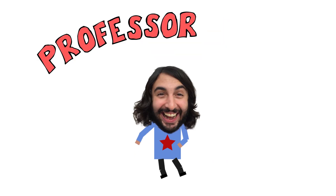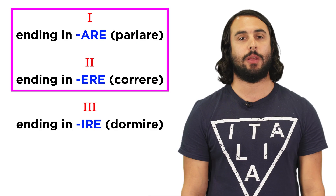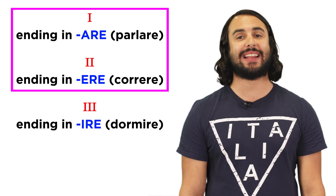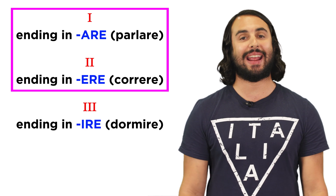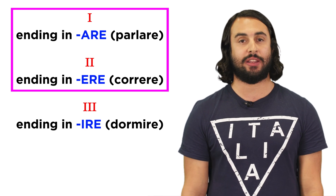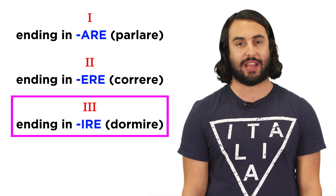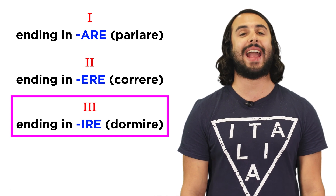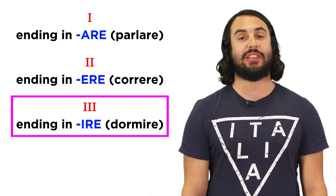It's Professor Dave, let's do another round of verb conjugation. We've gone through the first and second conjugations, which include verbs ending in –are and –ere, so we may as well wrap things up and go through the third conjugation, which includes verbs ending in –ire.